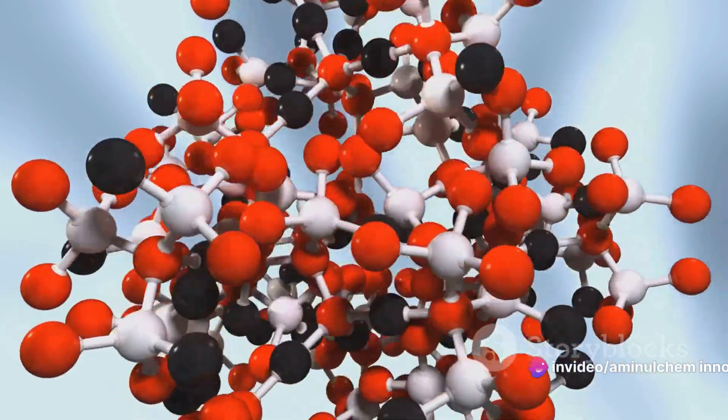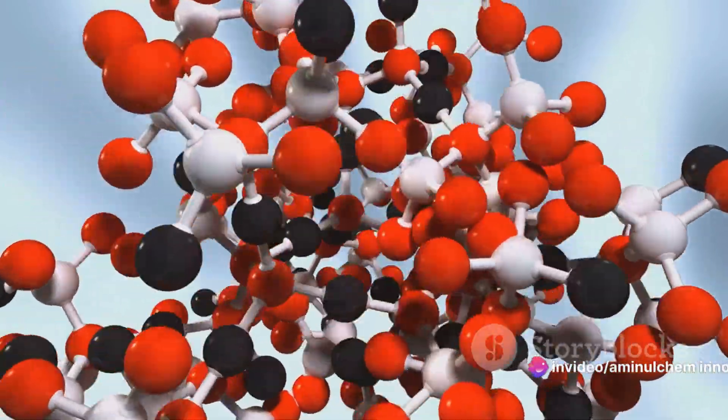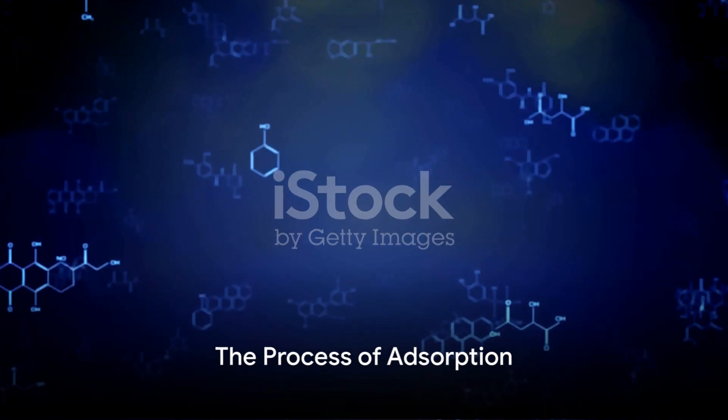This accumulation can form a film, either a single layer or multiple layers, on the surface of the adsorbent. So how does this process unfold?